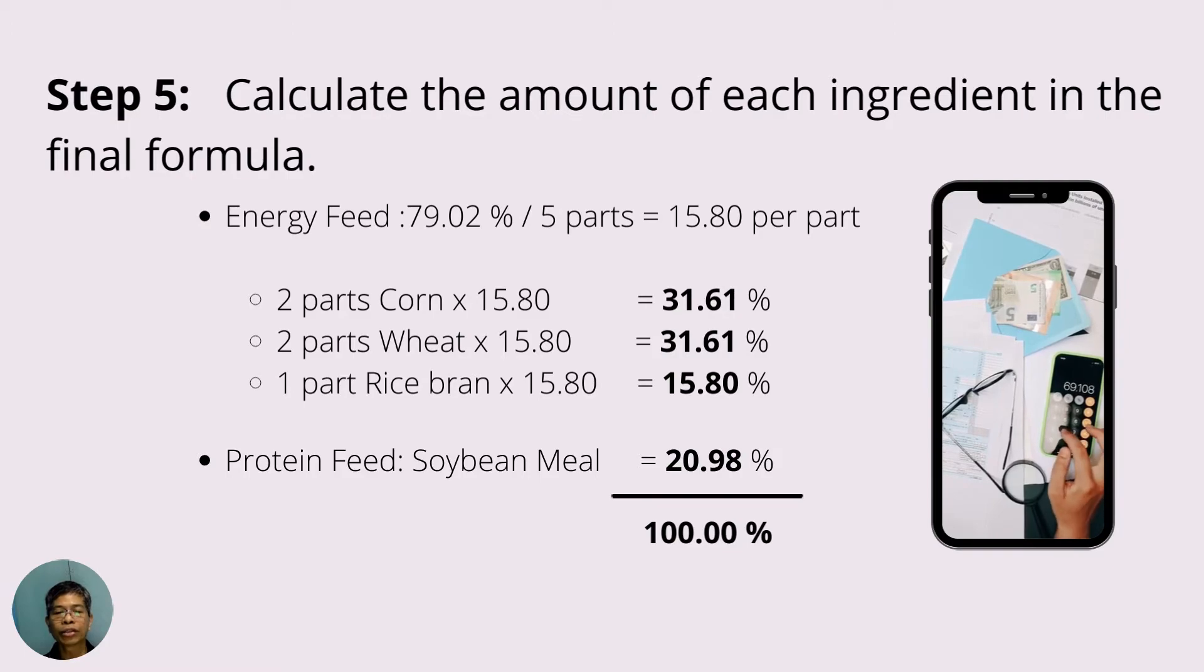Since corn has two parts, multiply 15.8 by 2 to get 31.61%. So 31.61 is the amount of corn that goes in the final formula. Do the same for wheat and then for rice bran according to their respective ratio. And then put soybean meal as determined in the previous step. Summing it up, you'll get 100%. So now you have the final amount of each ingredient to be used to satisfy the nutrient requirement.